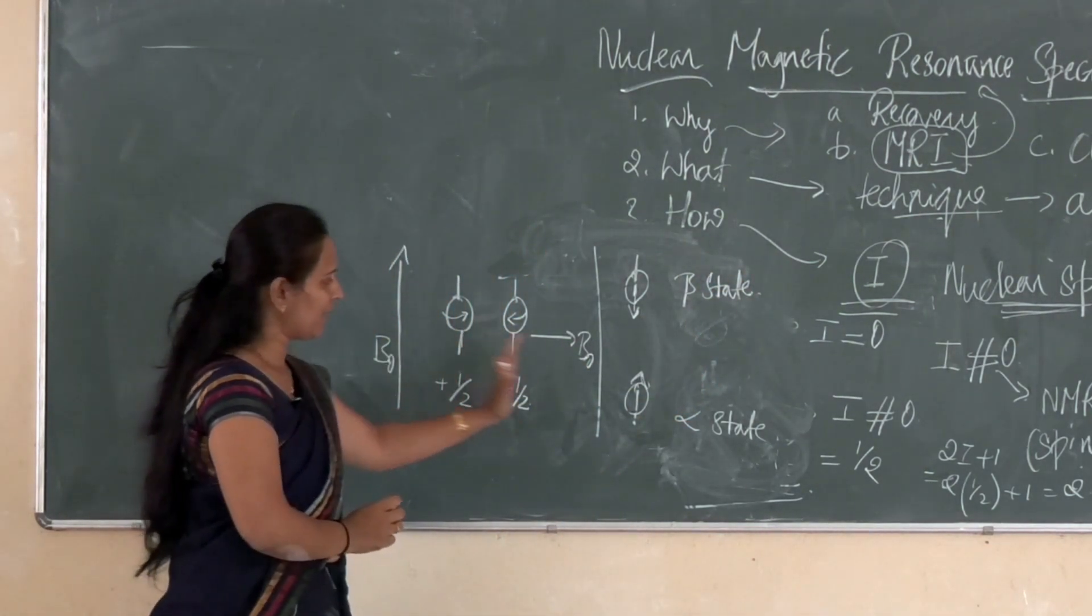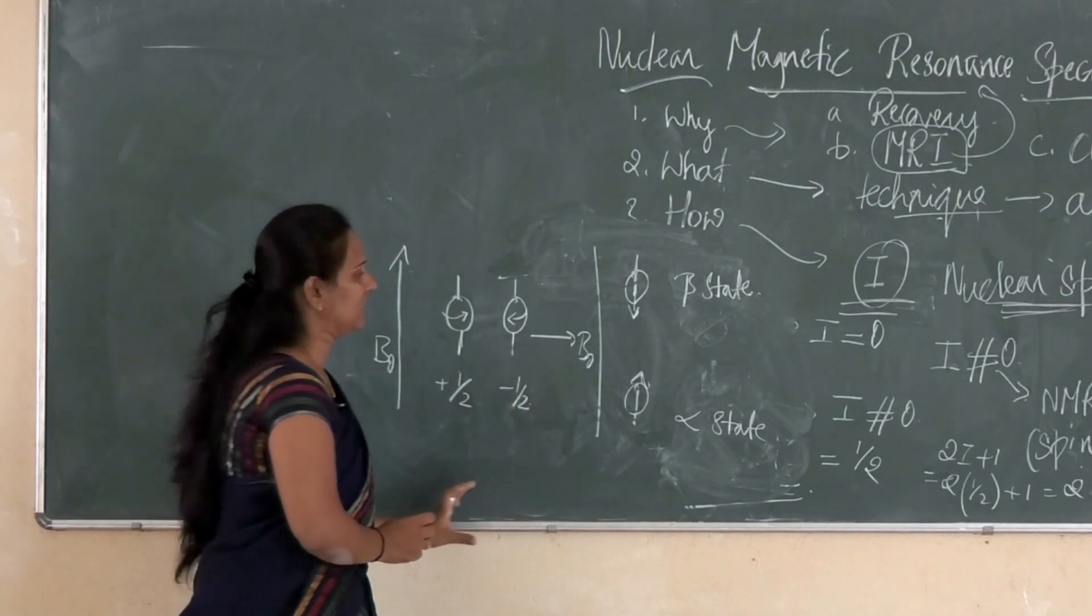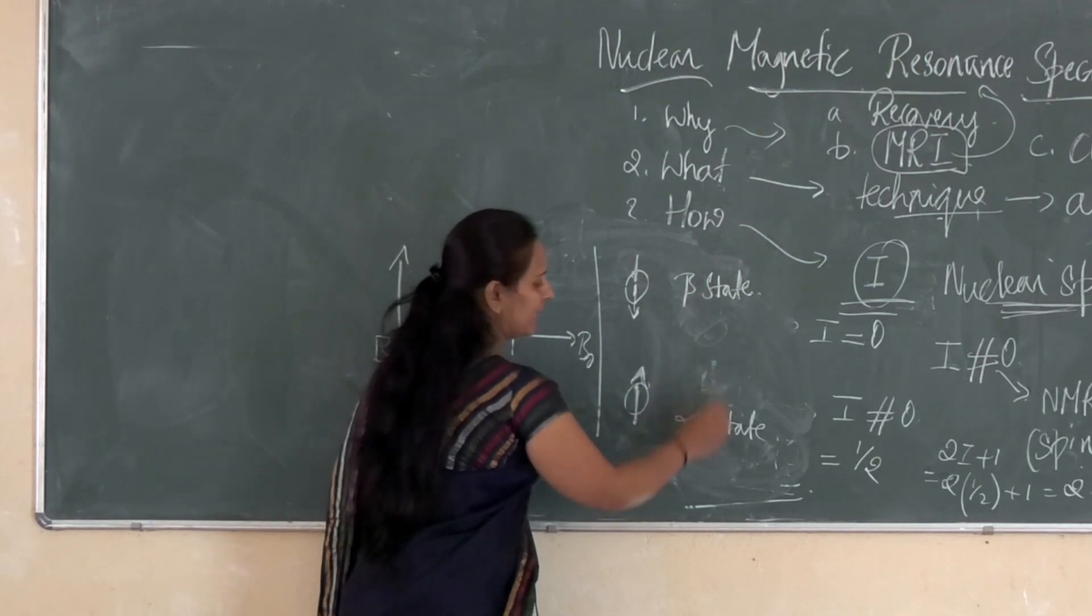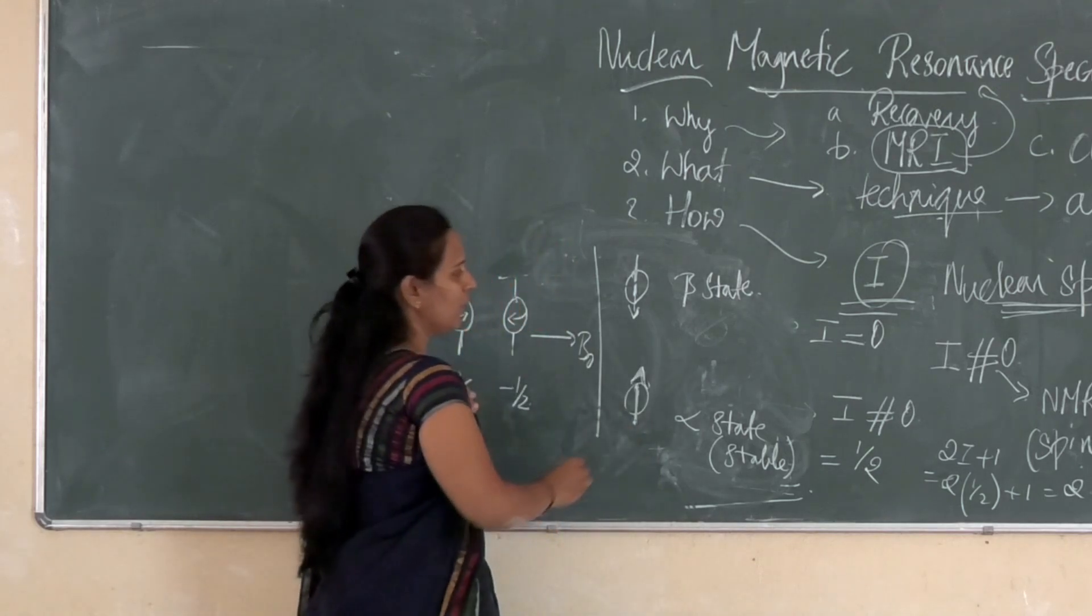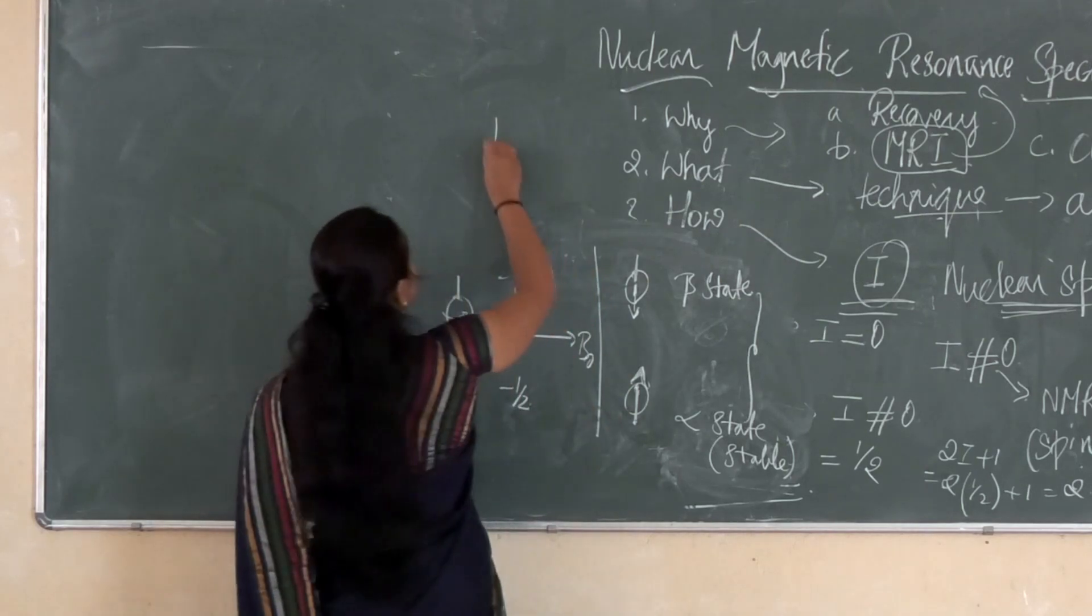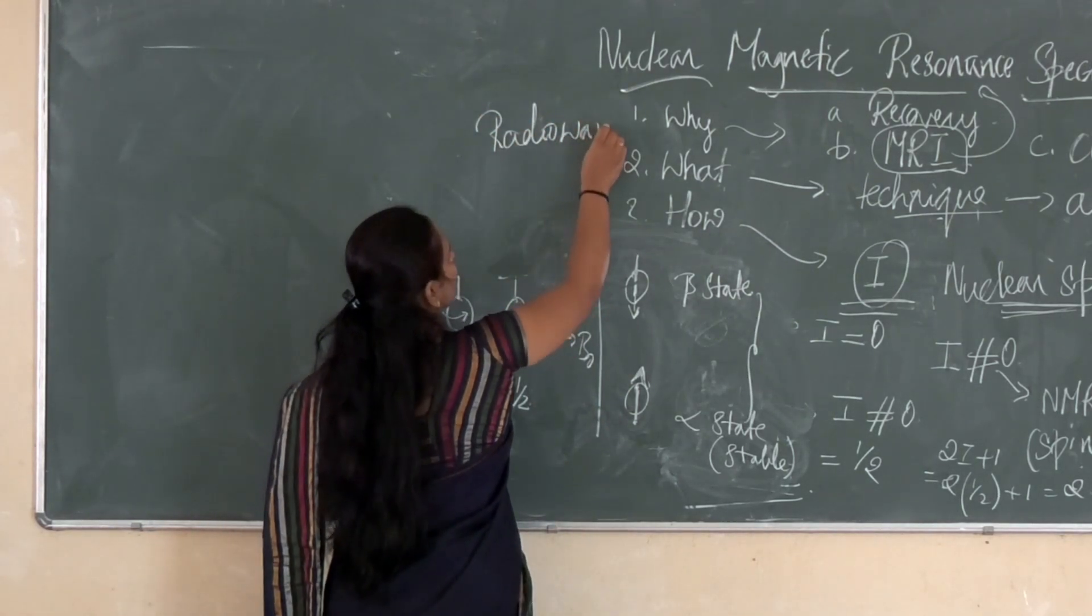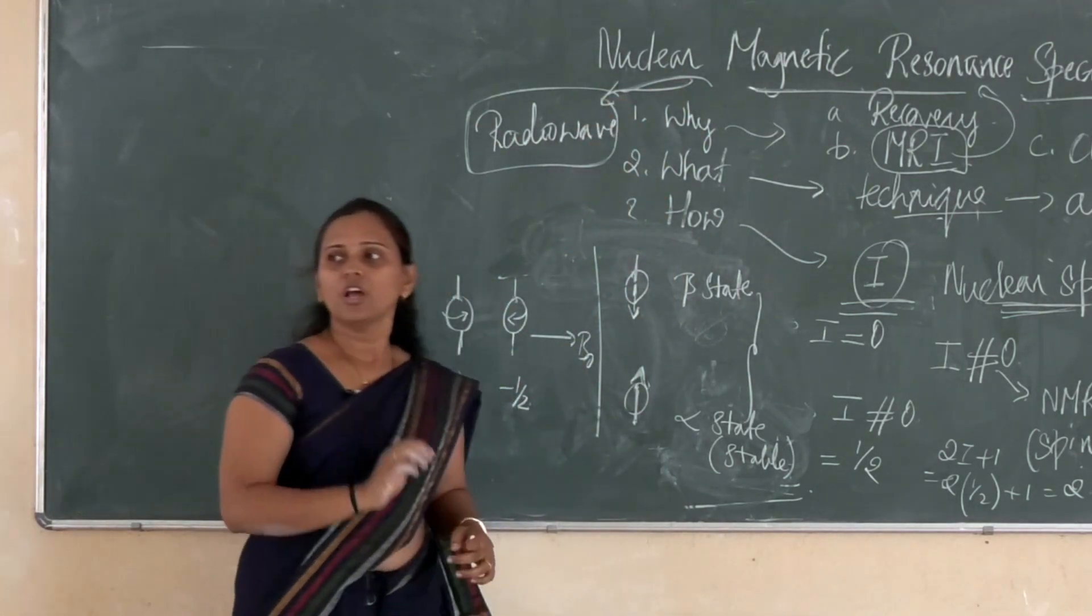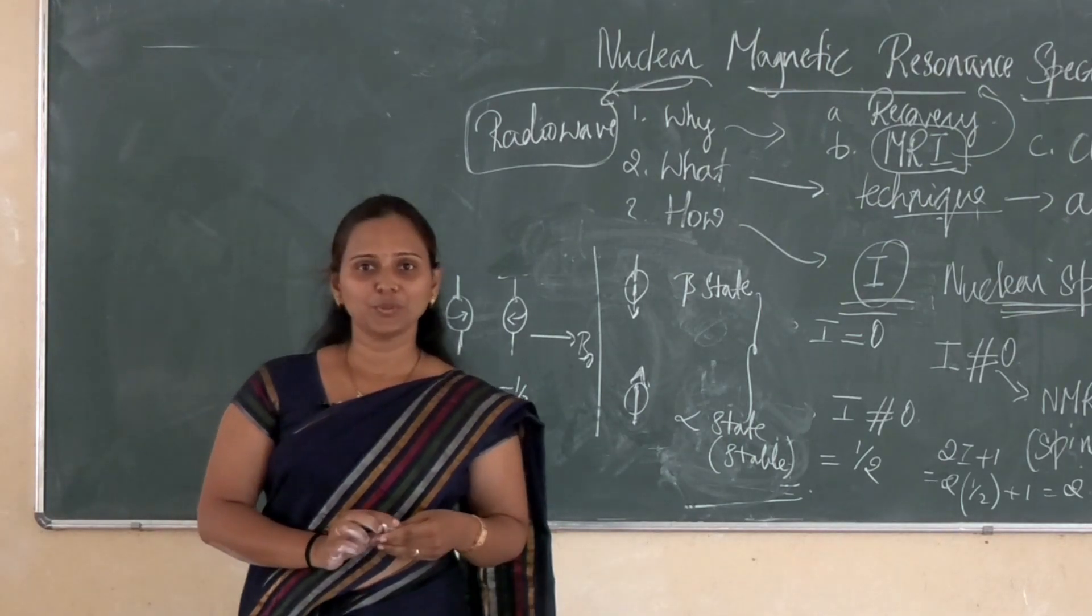This is when external magnetic field is applied to the nuclear spin of equal energy. Now it is in different energy state, alpha and beta and it is called as stable state. The difference between the energy of these two states corresponds to radio wave. NMR utilizes or uses low energy radio frequency of electromagnetic radiation.